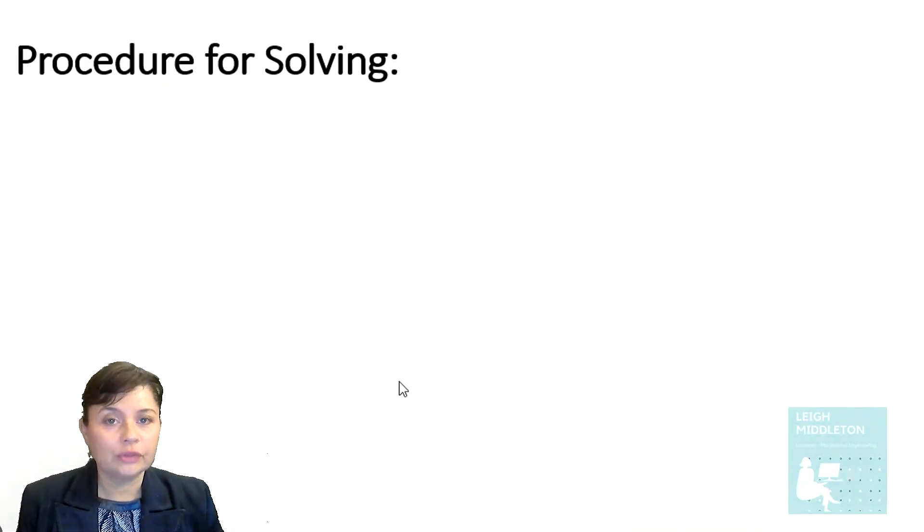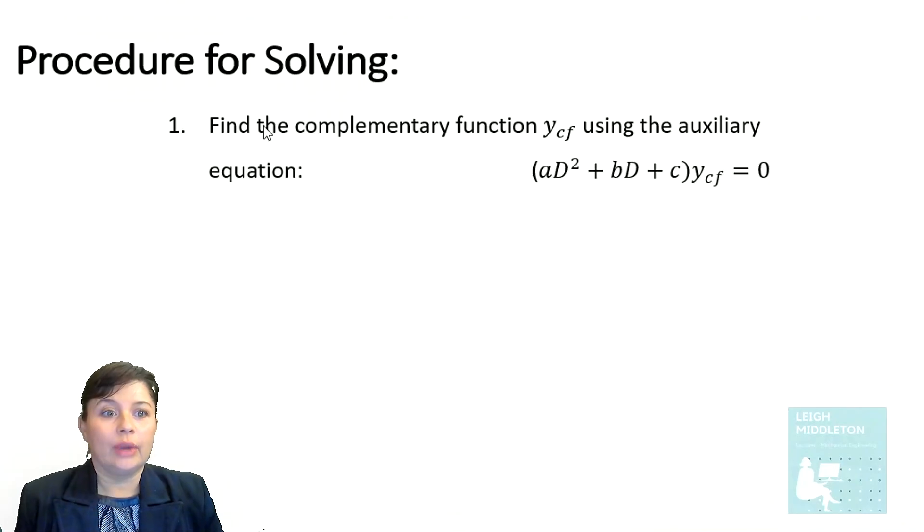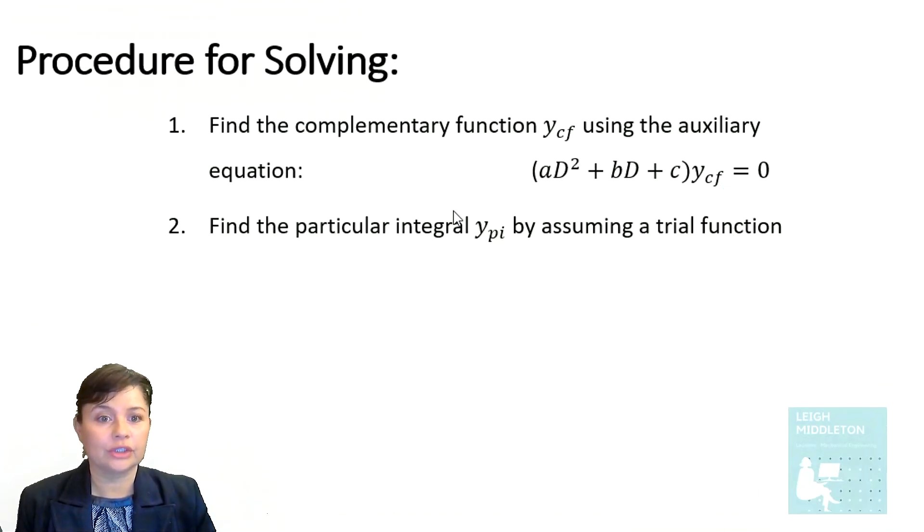Now the procedure for solving a non-homogeneous differential equation is as follows. You have to remember that your final answer is made up of two parts. So you have to first find the solution for the complementary function, and then the particular integral, and then put them together. So if we start off with a complementary function, here we use the auxiliary equation in order to solve for that complementary function.